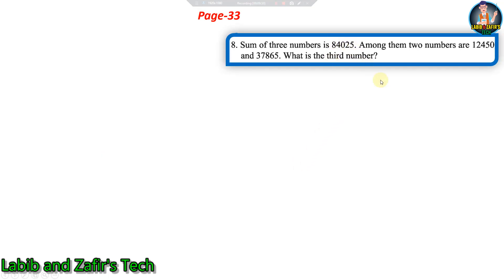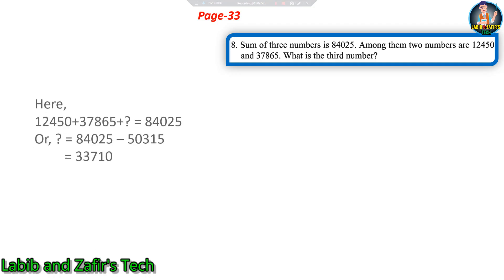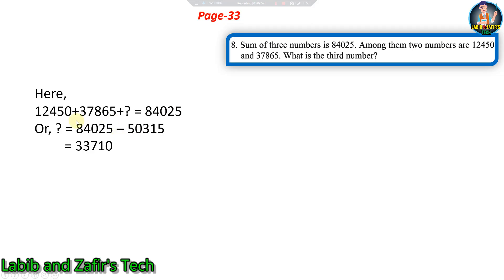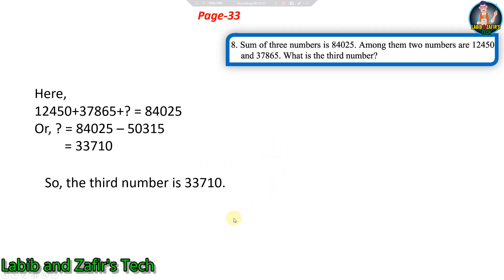Next: The sum of three numbers is eighty-four thousand twenty-five. Two of the numbers are twelve thousand four hundred fifty and thirty-seven thousand eight hundred sixty-five. What is the third number? We add the two known numbers: 12,450 plus 37,865 equals 50,315. Then subtract from the total: 84,025 minus 50,315 equals 33,710. Answer: the third number is thirty-three thousand seven hundred ten.